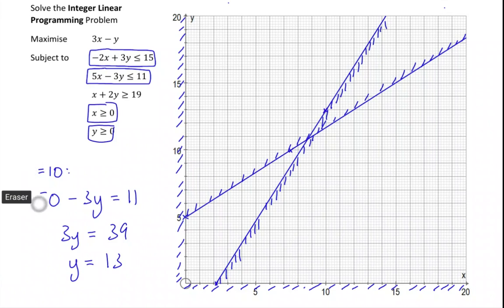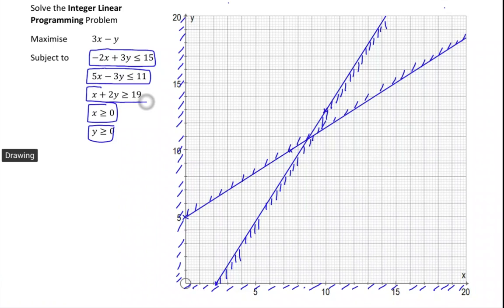We've got one left. x plus 2y is greater than or equal to 19. Well when y is 0, x is 19, so it's definitely going through this point down here. And when x is 0, y will be 19 divided by 2 which is 9.5, so about there. That's not too bad to draw that one.